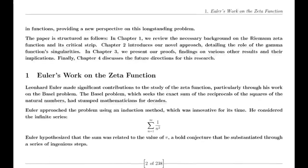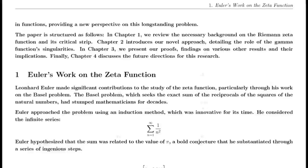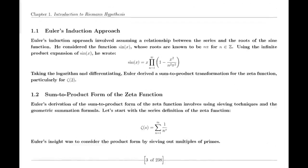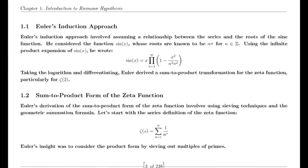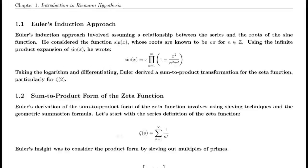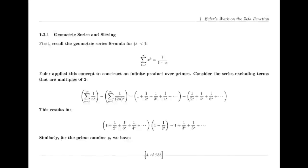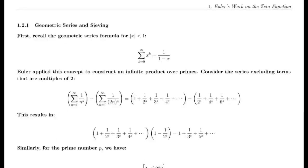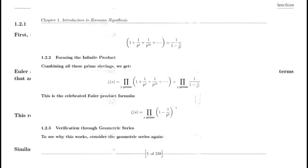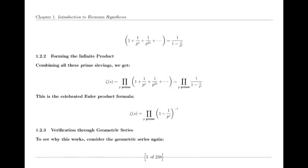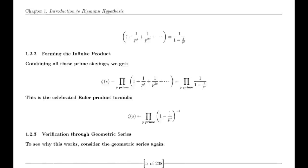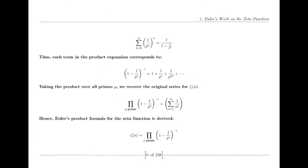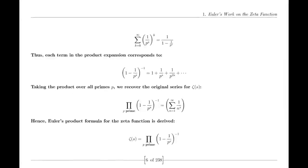One of Riemann's major discoveries was the reflection formula for the zeta function. This formula demonstrates a symmetry between the values of the zeta function at s and 1 minus s. Specifically, it shows that ζ(1−s) can be expressed in terms of ζ(s) using factors involving π, the Gamma function, and trigonometric functions. This reflection formula is fundamental to the theory of the zeta function and provides deep insights into its structure.